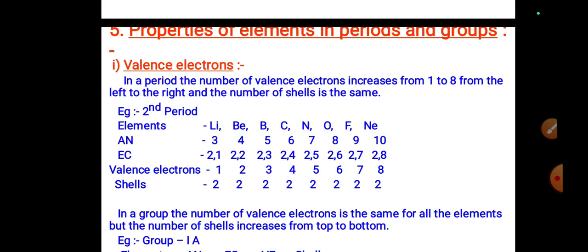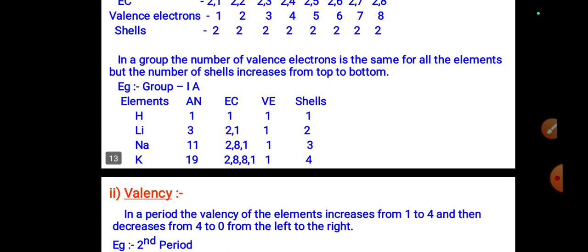In a group, the number of valence electrons is the same for all elements, but the number of shells increases from top to bottom. For example, in group 1A: hydrogen (atomic number 1), lithium (3), sodium (11), and potassium (19).